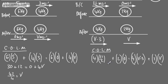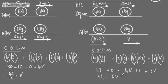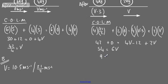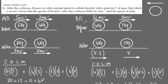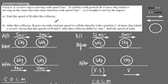That's one approach to this problem. Working it out: 42 + 0 = 4V − 12 + 2V. Adding 12 to both sides gives 54 = 6V, so V = 9. Therefore C has a speed of 9 meters per second and B has a speed of 9 − 3 = 6 meters per second. That's a standard question on conservation of linear momentum.